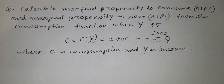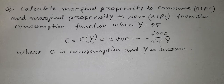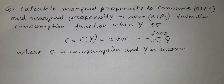Hello viewers. In this video we calculate the marginal propensity to consume and marginal propensity to save from the consumption function. The question is: calculate MPC and MPS from the consumption function when y equals 95. The function is given as c(y) = 2000 minus 6000 divided by (5 plus y), where c is consumption and y is income.